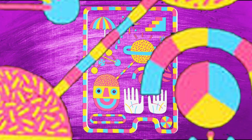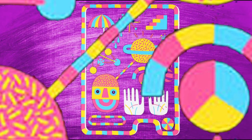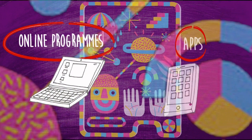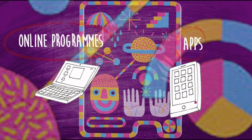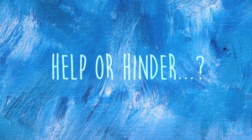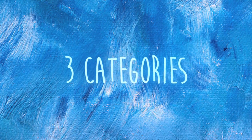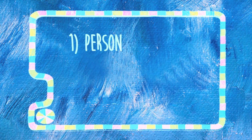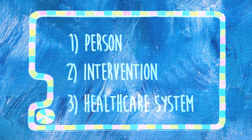The studies looked at a range of interventions including online programs and apps, examining what factors helped or hindered. We split them into three categories: the person, the intervention, and the healthcare system.